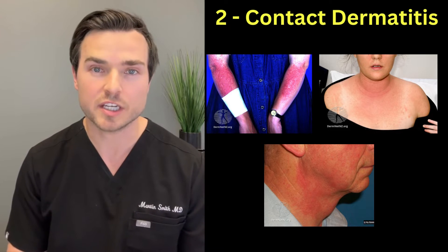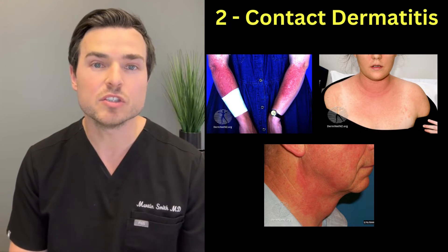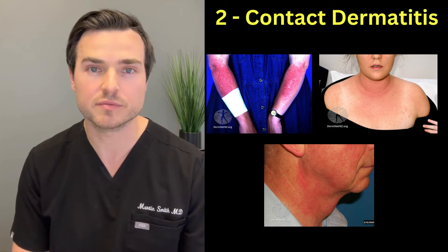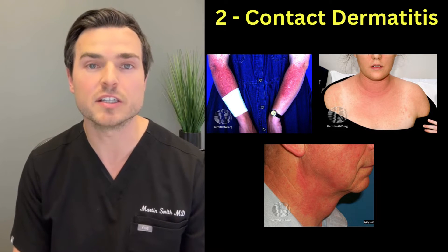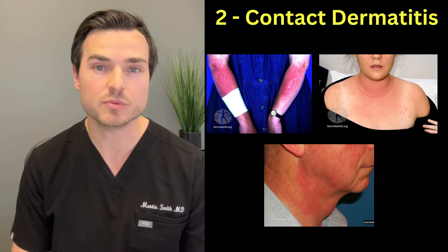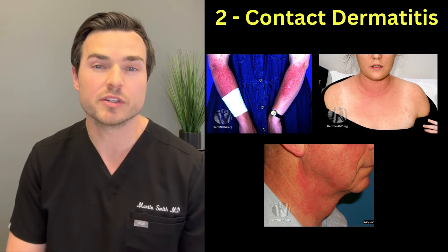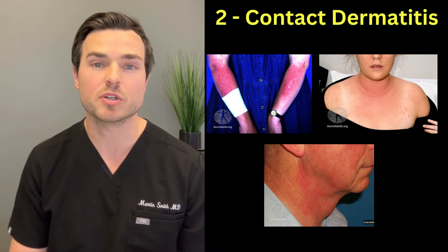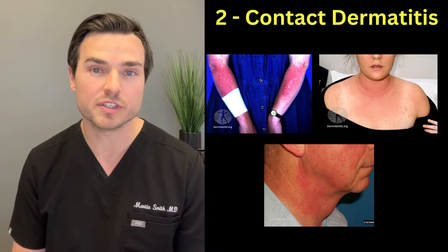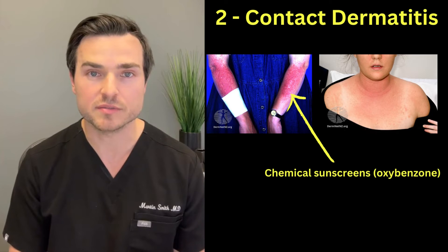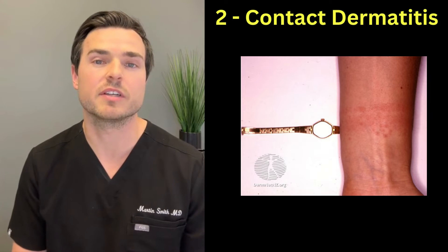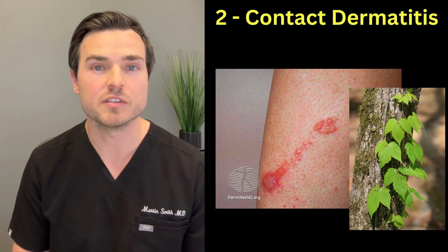The second form of eczema is called contact dermatitis. This is an allergic reaction that happens when your skin comes into contact with an irritant or an allergen. It's broken down into irritant contact dermatitis and allergic contact dermatitis, causing an itchy, scaly, red rash with little bumps or blisters. Common triggers include personal care products containing allergens and irritants such as fragrances, preservatives, surfactants, and even sunscreens, as well as nickel found in costume jewelry and belt buckles, and poison ivy.